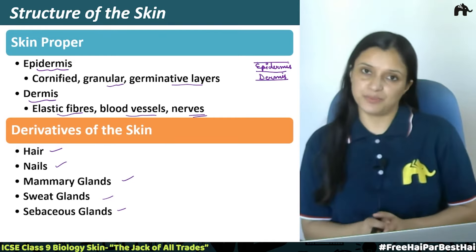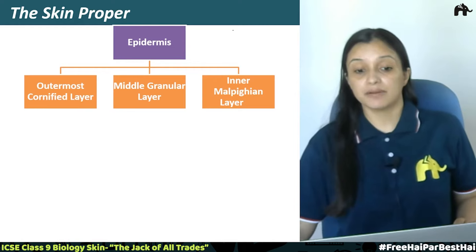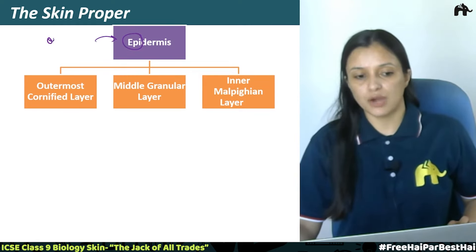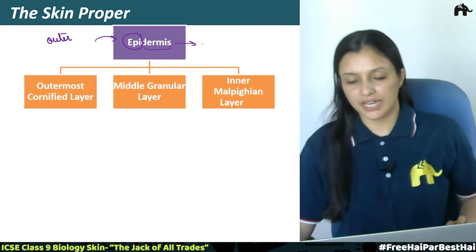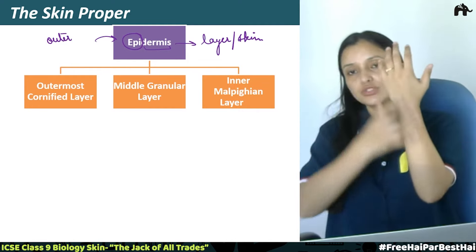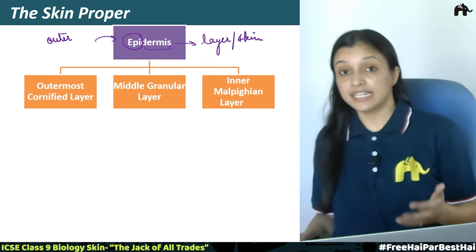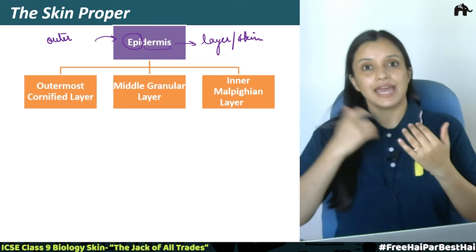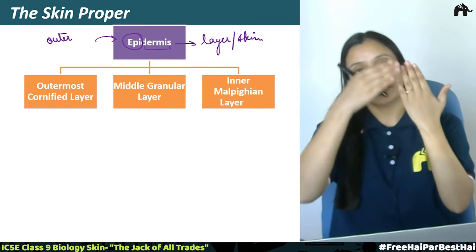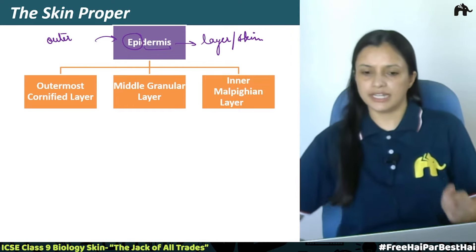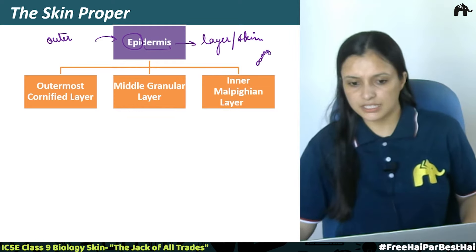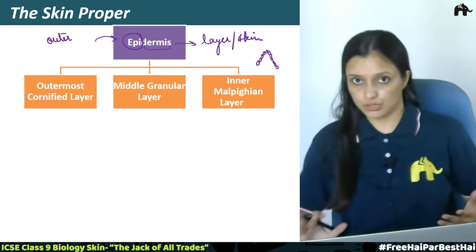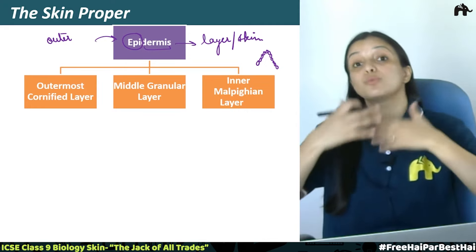Let us start with the epidermis. The skin proper's outermost layer is the epidermis. 'Epi' means outer, and 'dermis' means layer or skin — so epidermis is the outermost skin layer. The epidermis is made of many thin layers of cells, and it is not a single-cell layer — it is a stratified epithelium, meaning there are more than one layer of cells. You can see some areas where the epidermis is very thick, such as the palms, toes, and heels.